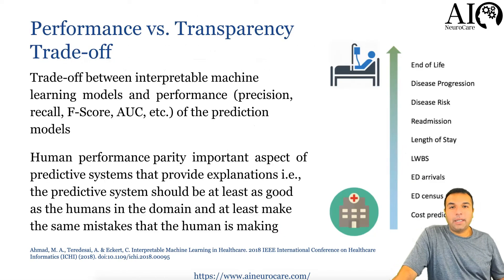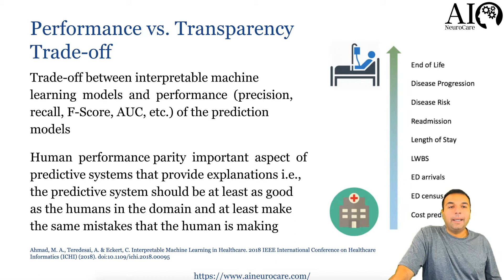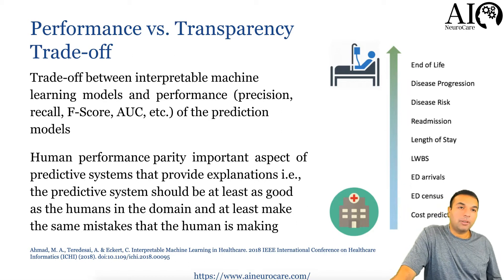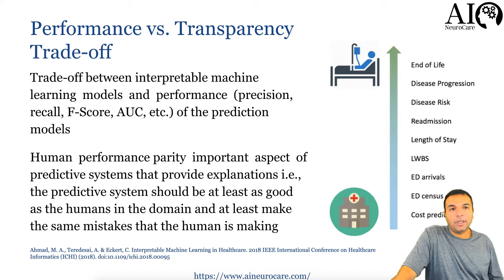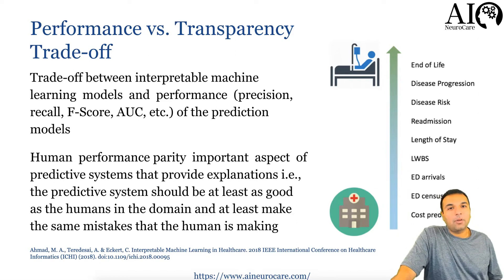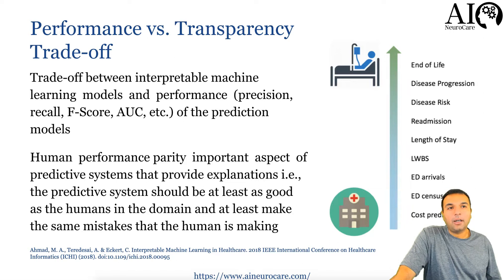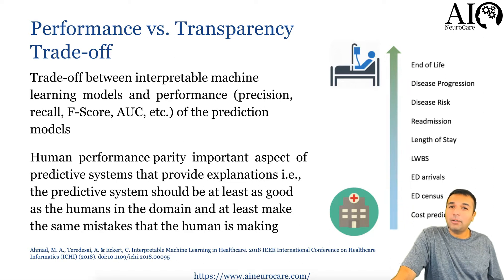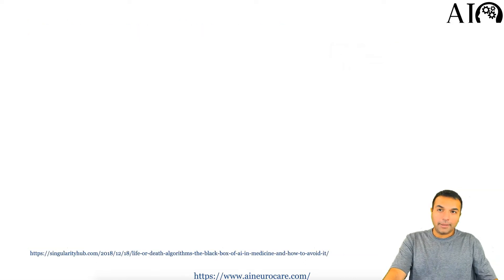In certain situations, this trade-off is acceptable. If you're doing cost predictions, length of stay, or ED arrival forecasting, that's fine — you can forego interpretability. But if you're diagnosing a patient and assessing an ICA score of four versus five and thinking about end-of-life issues, you absolutely need to be able to explain the reasoning. That's where the crux of the matter lies.